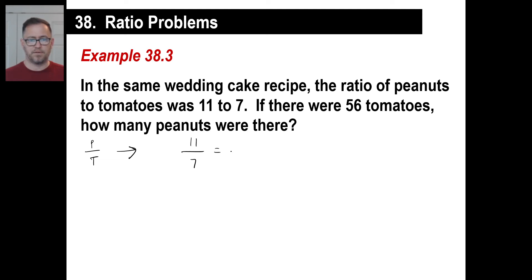Now we know we're going to do this kind of doohickey thing. If there were 56 tomatoes, that goes in the bottom this time, matching with tomatoes. How many peanuts were there? We don't know. We'll just call it P. And then we'll do our cross multiplying. 7 times P is 7P. 11 times 56 is 616. We'll just divide by 7. And then P is equal to 88.